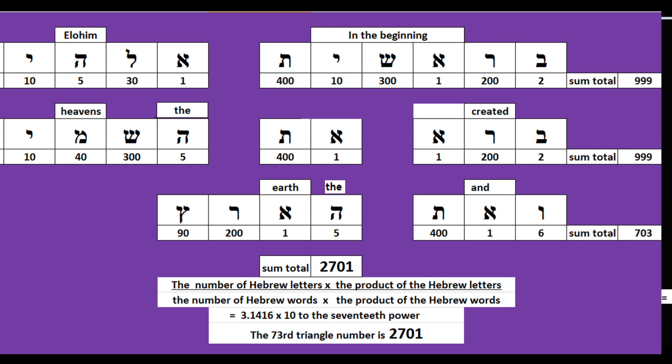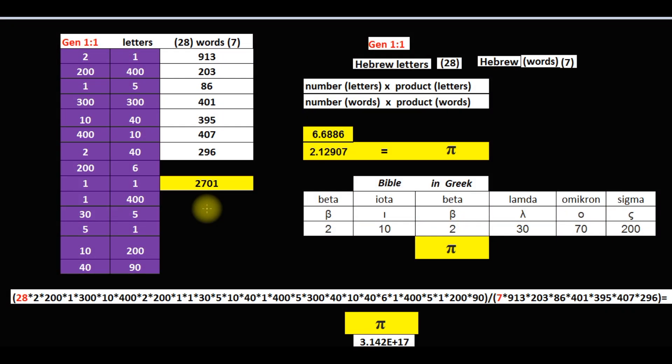Encoded in the Hebrew letters, the 28 Hebrew letters and 7 Hebrew words of Genesis 1:1 is pi. 28 times the value of each letter divided by 7 times the value of each of the seven words equals pi.